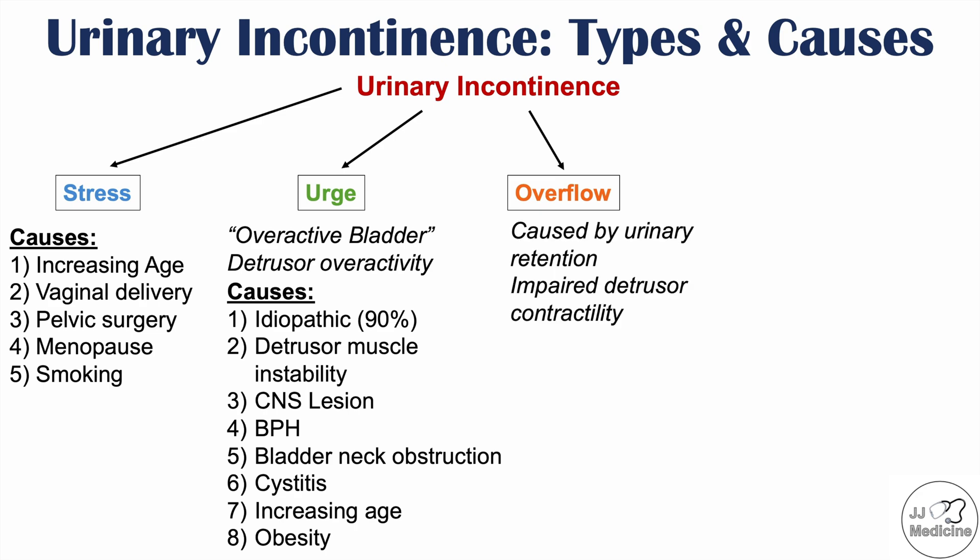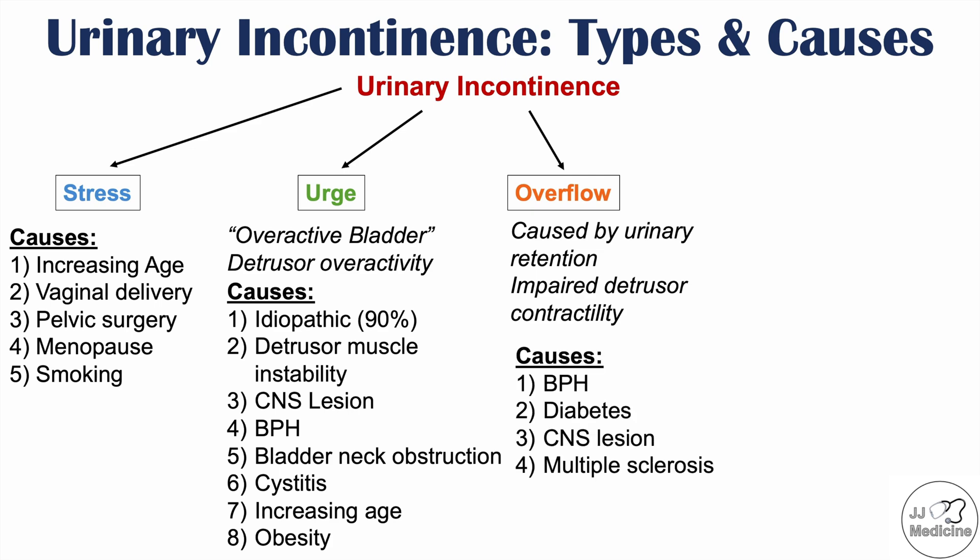Overflow urinary incontinence is caused by urinary retention and is essentially the opposite of urge incontinence, involving impaired detrusor contractility. Benign prostatic hyperplasia is a very significant cause, as a large prostate obstructs urine outflow, stretching the bladder and impairing the detrusor muscle. Overflow incontinence can also be seen with diabetes, central nervous system lesions, and multiple sclerosis — pathologies that affect the ability to contract the detrusor muscle.